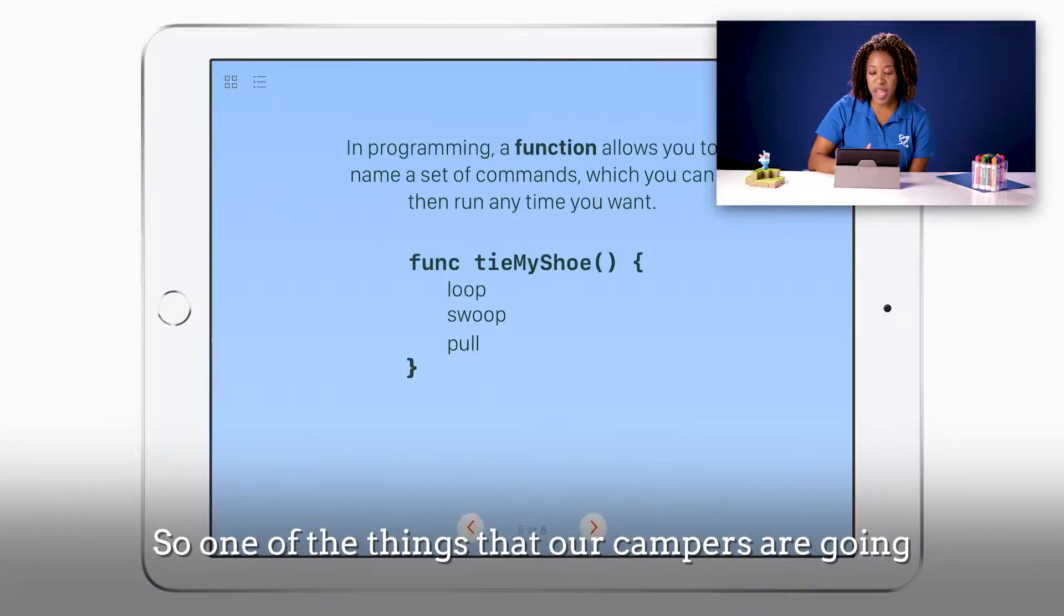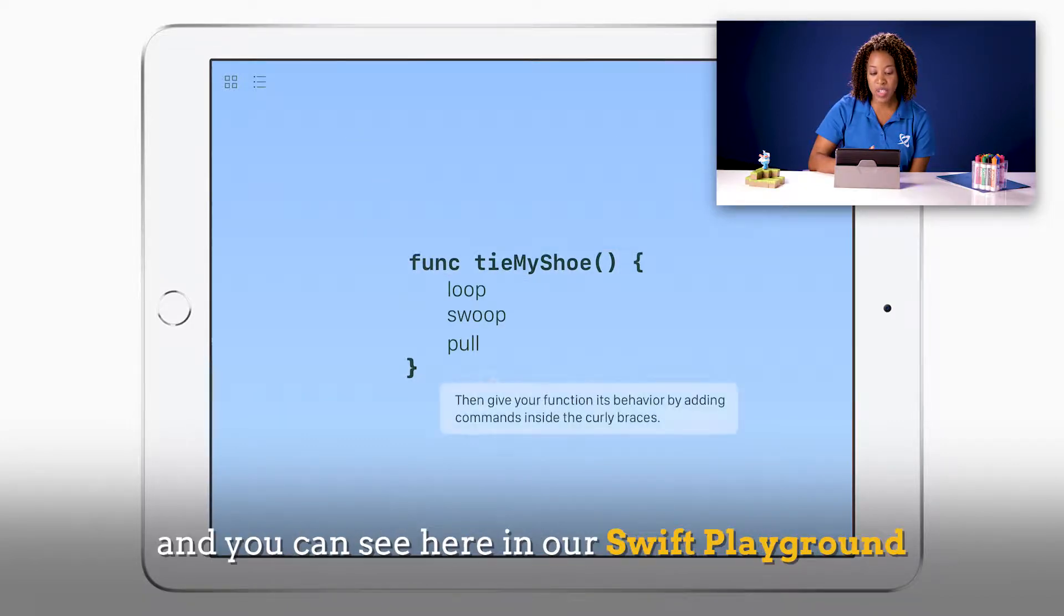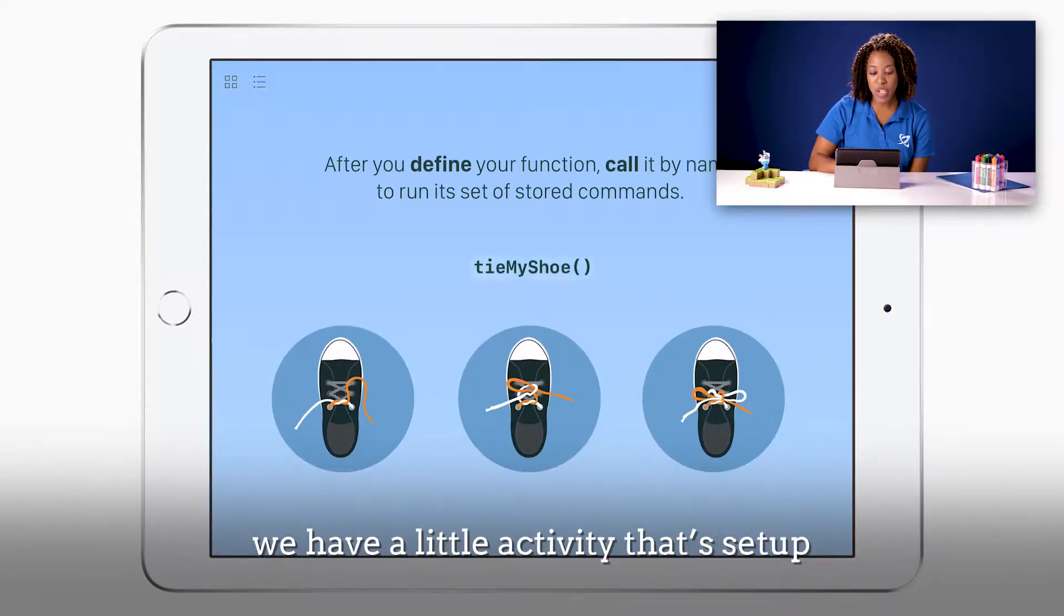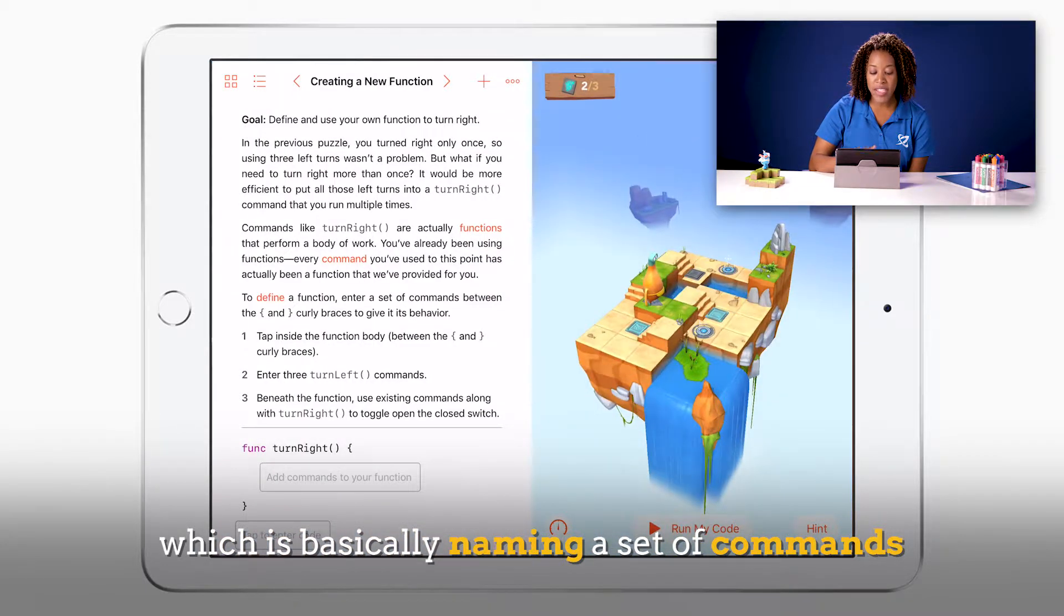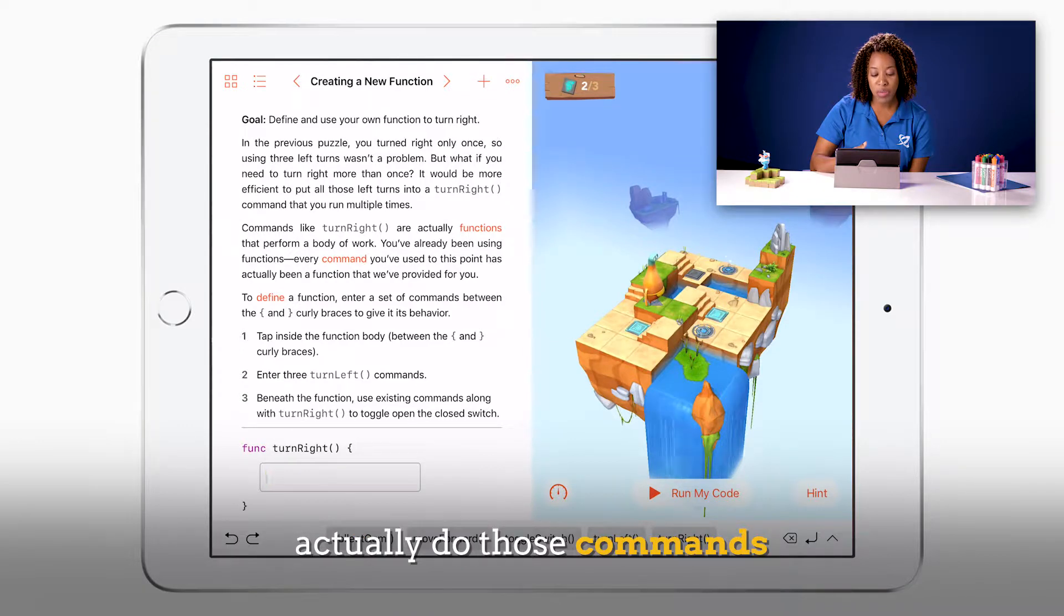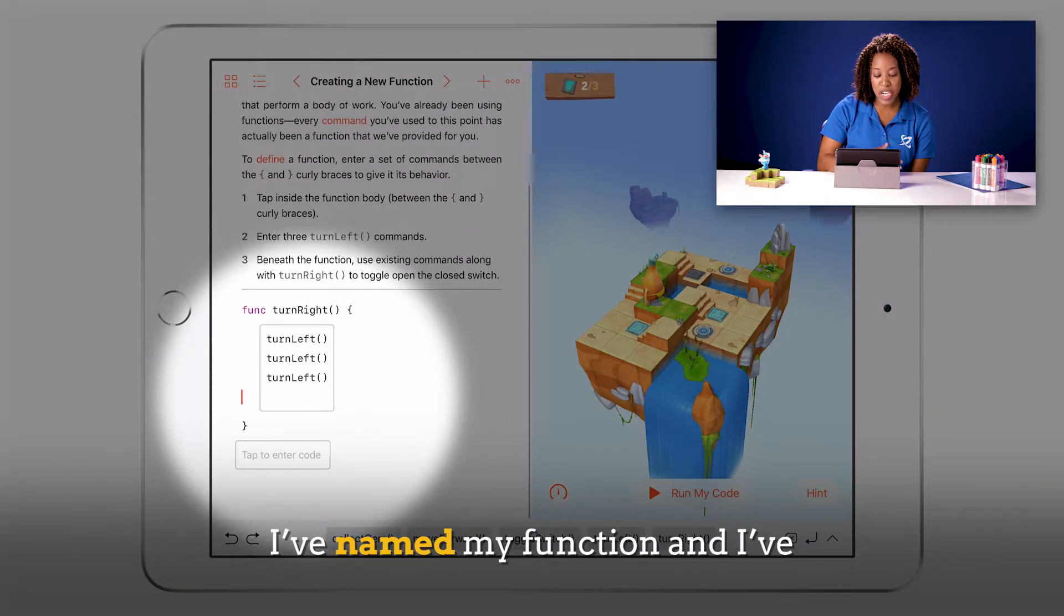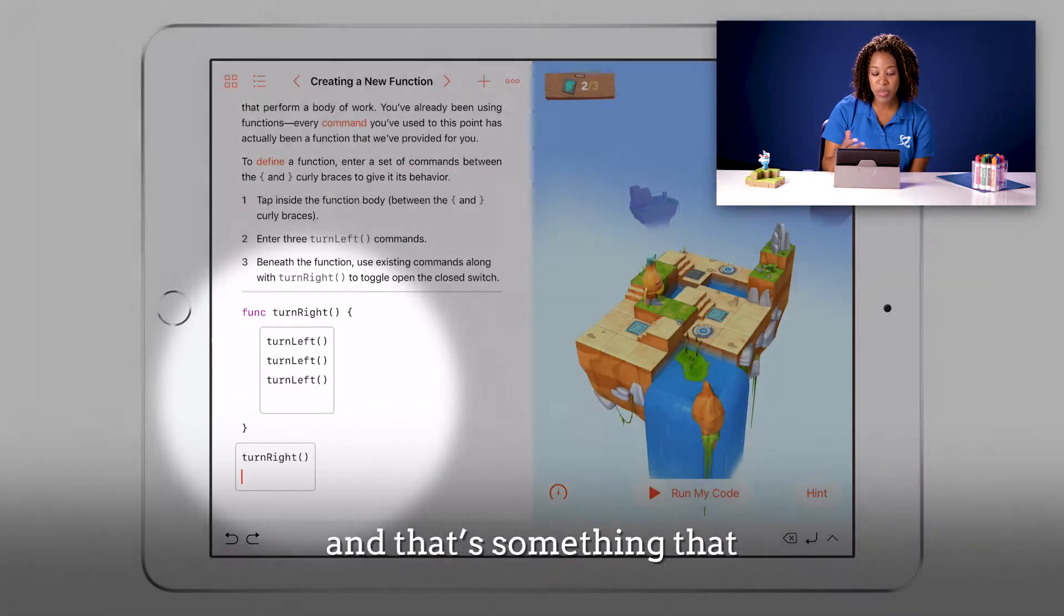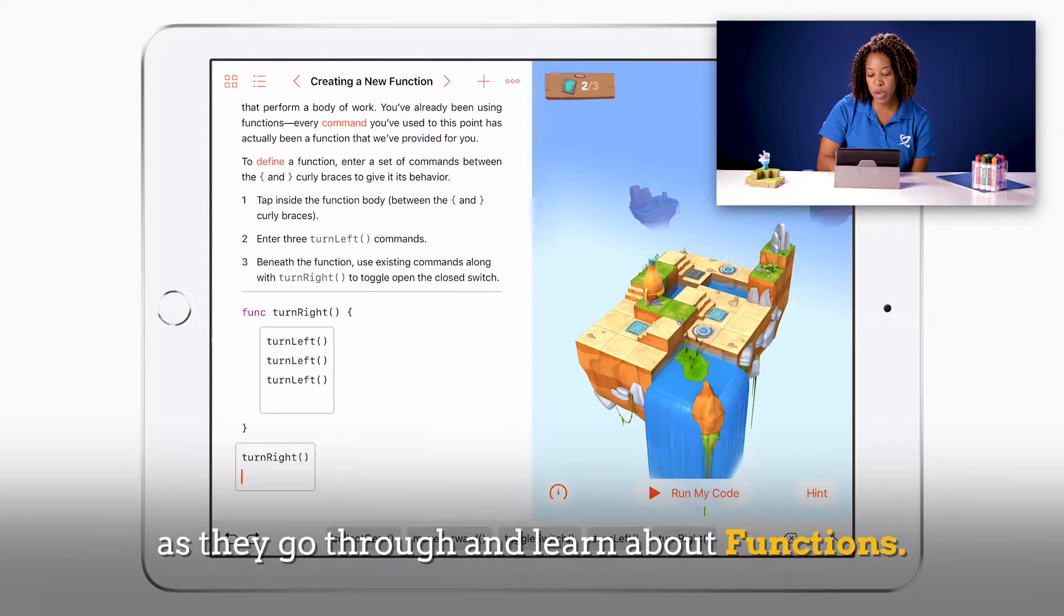So one of the things that our campers are going to learn about in camp is functions. You can see here in our Swift Playground we have a little activity that's set up to help the kids learn what a function is, which is basically naming a set of commands and then calling or having the computer actually do those commands. You'll see here I've named my function and I've put some commands in there, and then I'm calling my function. That's something that just one little thing that the kids will do as they go through and learn about functions.